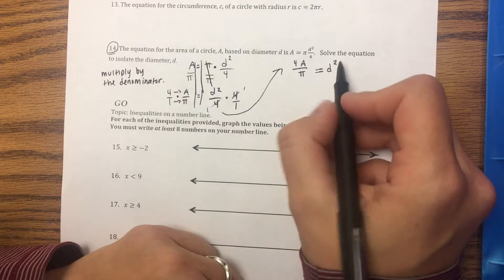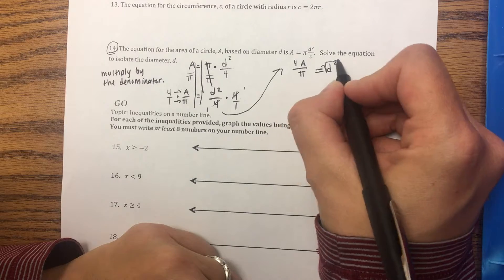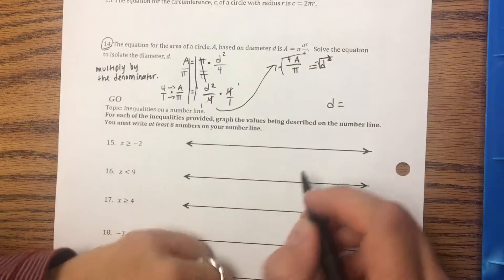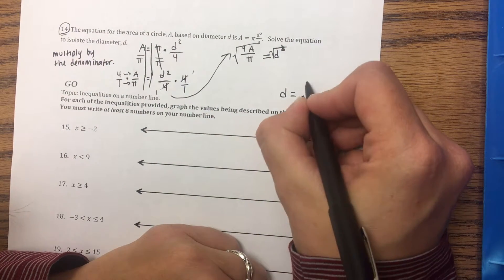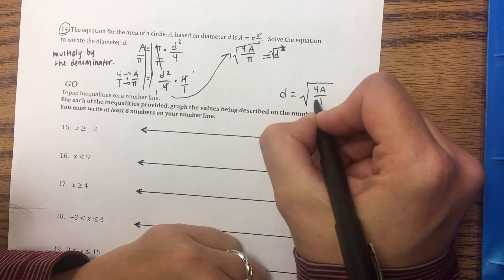So last step to get d by itself. Right now it's d squared, we just want our answer to be d equals. So the opposite of a square is a square root. Those are canceling, and what you do to one side of the equation you do to the other. So this is our answer: d is the square root of 4a divided by pi.